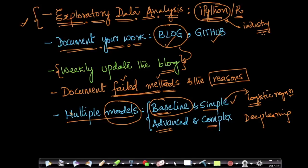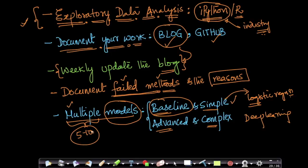Simple techniques sometimes work much better than complex ones. Always apply simple baseline techniques like k-nearest neighbor, Naive Bayes, and logistic regression before moving on to advanced algorithms. Also, try multiple techniques — don't stick to one favorite algorithm like SVM everywhere. Apply five or ten techniques you're comfortable with to understand how multiple approaches work, when they succeed, and when they fail.